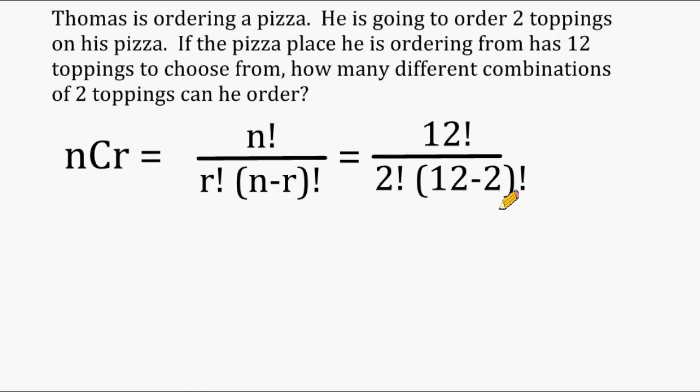And we're going to subtract those and do a factorial of that number. Now, this exclamation point stands for factorial, which is the process of taking that number and multiplying every number counting backwards before that number. So 2 factorial just means 2 times 1. If you had, say, a 3 factorial, that would mean 3 times 2 times 1.